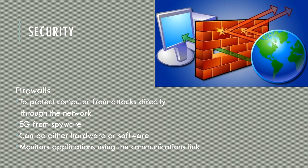Another aspect of security is your firewall. As you can see in the picture, the firewall is what goes between the big wide world — the internet — and you. It's like a wall that checks what data is coming in and going out, and makes sure that it is safe. So it protects your computer from external attacks and attempts to protect you from spyware. It could be either a hardware firewall or a software firewall. Windows 10 does come with a firewall that you can switch on, and it monitors the applications that use the communications link.